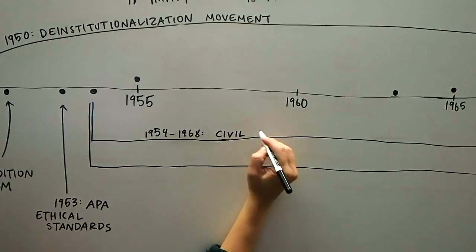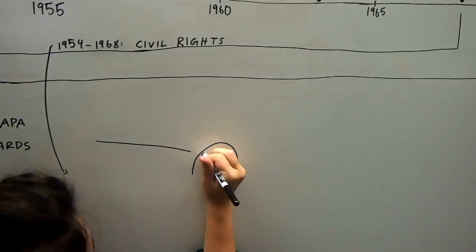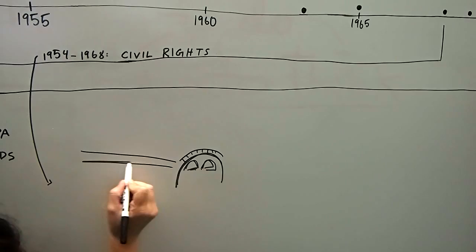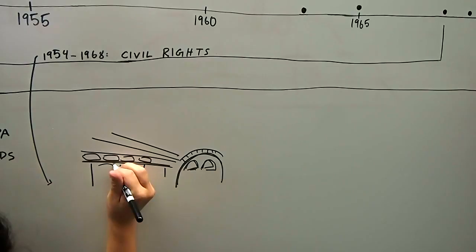1954 saw the start of the Civil Rights Movement, which relied on mass mobilization, nonviolent resistance, and civil disobedience as mechanisms for social change. A main tenet of the movement was desegregation, which allowed for greater inclusion of African American citizens in every aspect of American life.